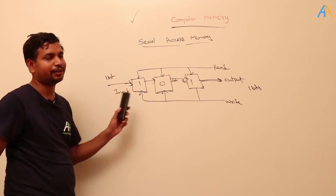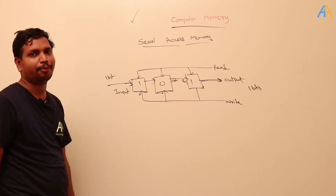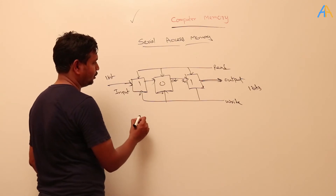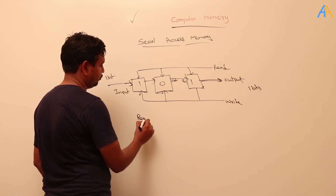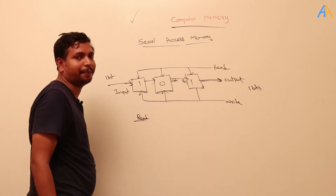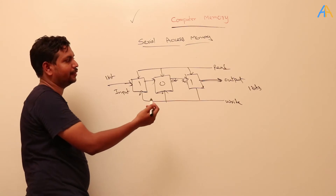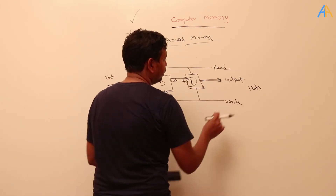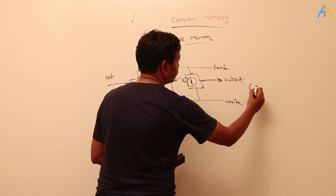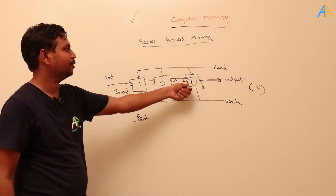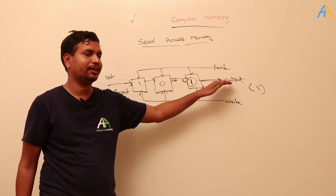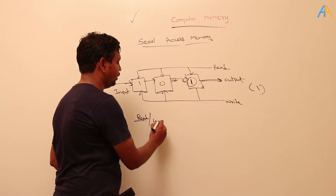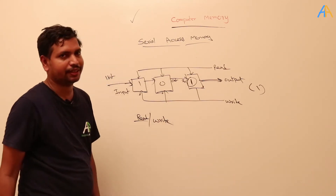If we issue a write signal, it will write only one value. For example, how the read/write signal operation happens: first you give the write operation, then the read operation. If you issue the read signal, it will read this output — one is here in the output register, so it will give the output of only this one value. It will read one. If you give the write signal, what will happen?